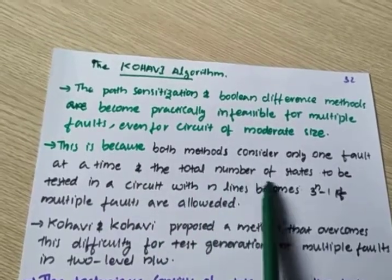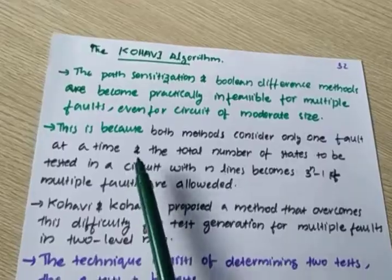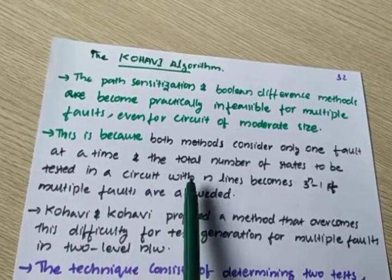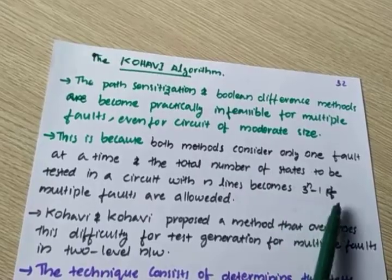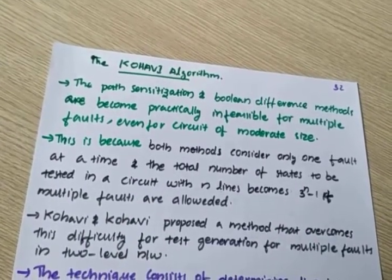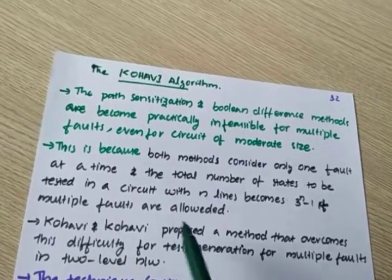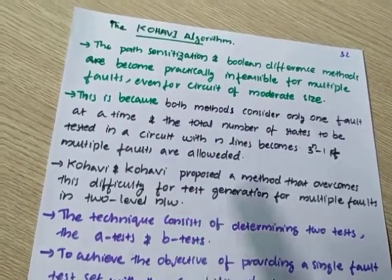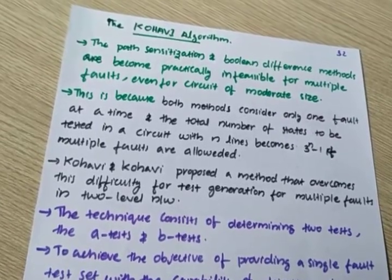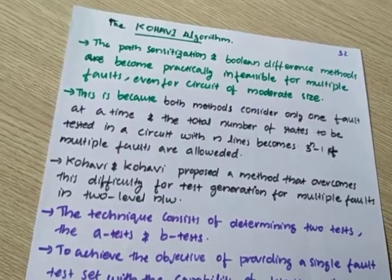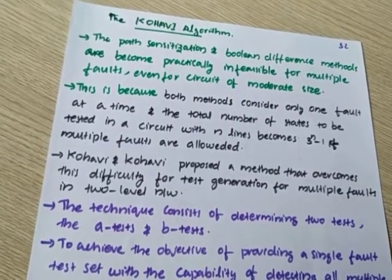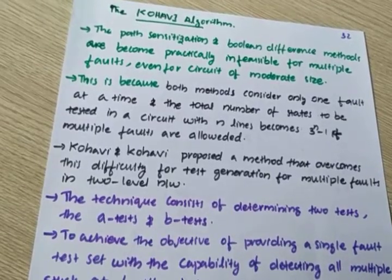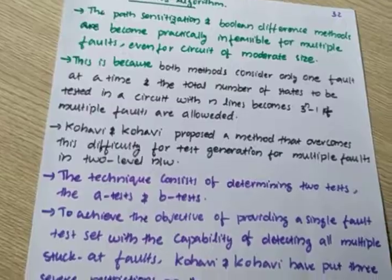The total number of faults and states to be tested in a circuit with n lines becomes 3 raised to n minus 1 when multiple faults are allowed. So it is very difficult to find out multiple faults using path sensitization and boolean difference methods, as the process becomes very hectic. Kohavi and Kohavi proposed a method that overcomes the difficulty of test generation for multiple faults in two-level networks. In 1972, they introduced an algorithm with which multiple faults can be identified easily.